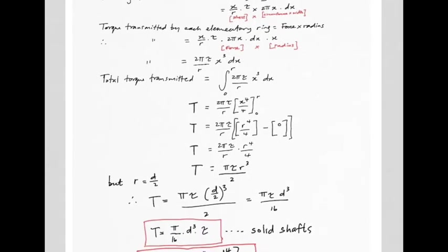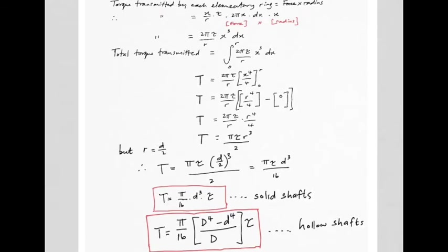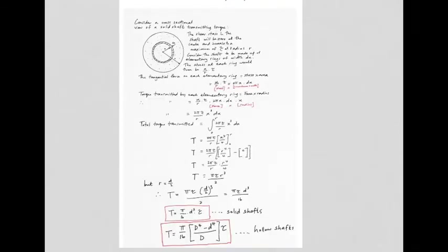We prefer to work in diameter rather than radius, so we convert and arrive at the final formula. In summary, if we apply a torque to a solid shaft, we use this formula to find the stress in the outermost fiber — the maximum stress. For a hollow shaft the formula is slightly different but the principle is the same; you need the outside diameter D and inside diameter d.